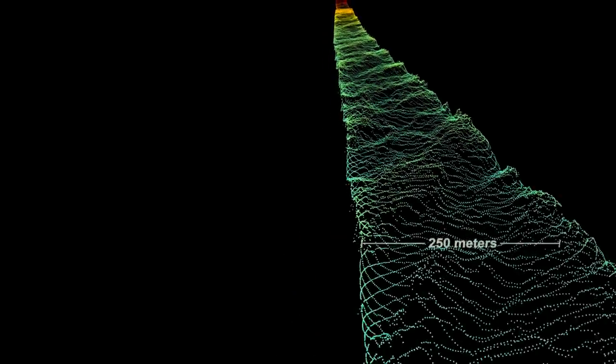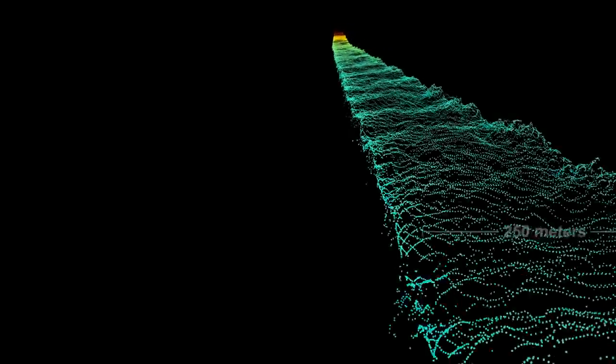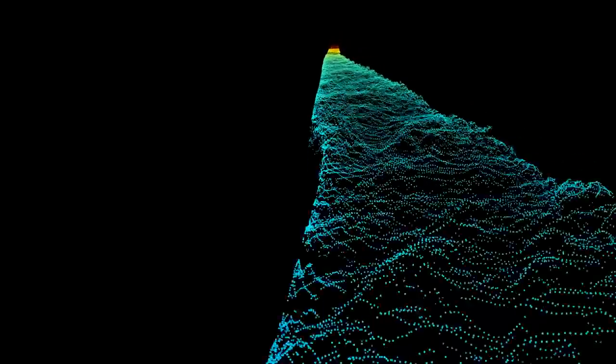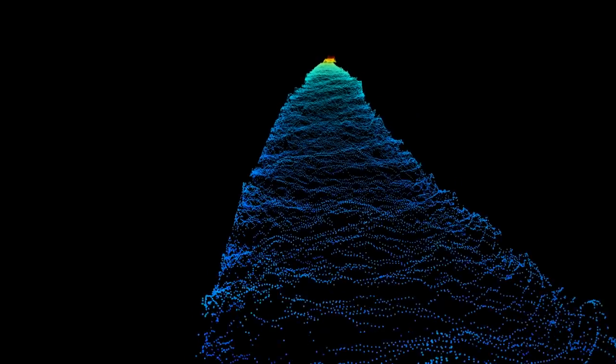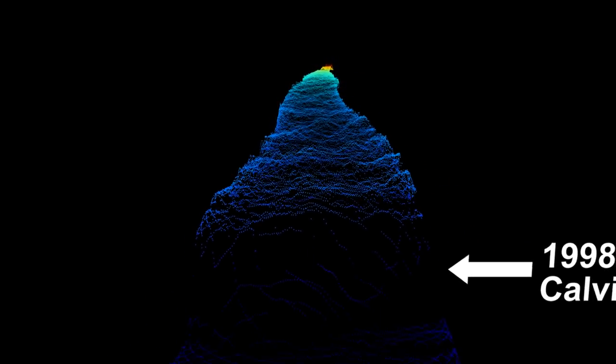Here, we've shown higher elevations in red and orange, and lower elevations in green and blue, all the way down to the glacier's calving front, where Helheim's mighty icebergs break off into the sea.